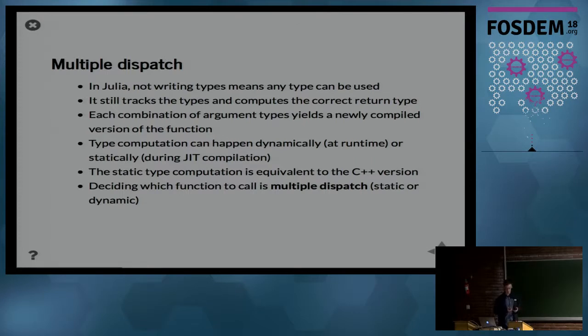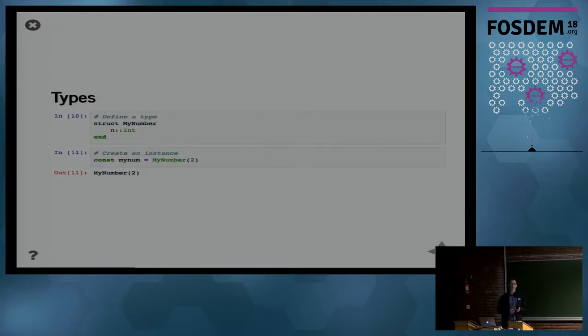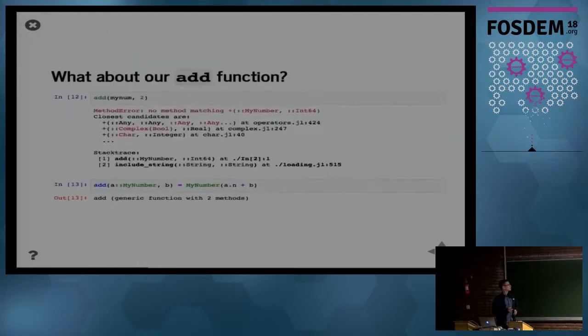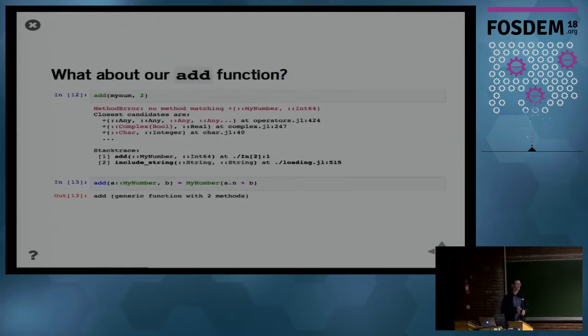Let's take a brief look at user-defined types. We can define a type like this which contains one single field, an integer value, and we can then create a value of my number containing the value 2, for example. So how does that work with our add function? As you can imagine, I didn't specify any type limitations on the add function, so I can just call the function on it. But of course, the plus operator in Julia is not defined for my number type.